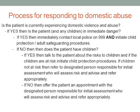If the patient and any children are not in immediate danger, the next question to assess is whether the patient has children. If they do, the clinician should talk to the patient about the risks to children, and if the children are at risk, initiate child protection procedures. In either case, they should offer the patient an appointment with a designated person responsible for initial assessment, who will assess risk and advise and refer appropriately.